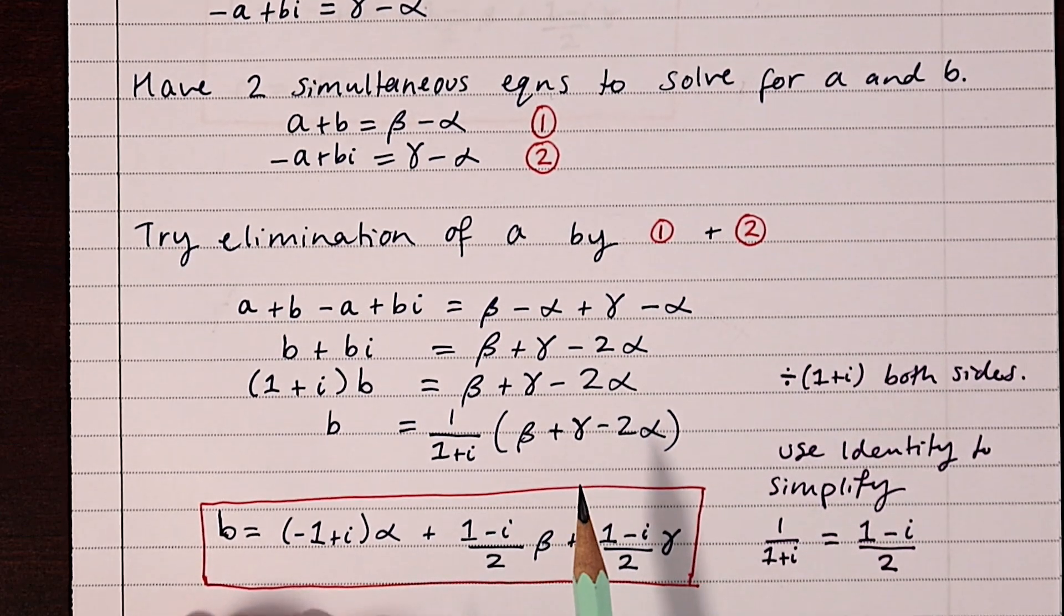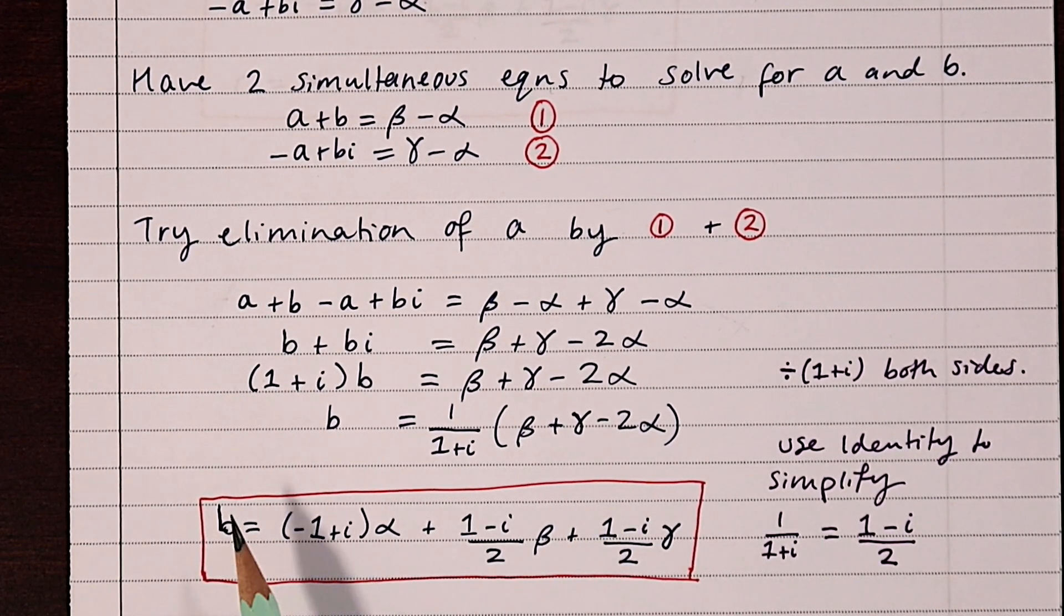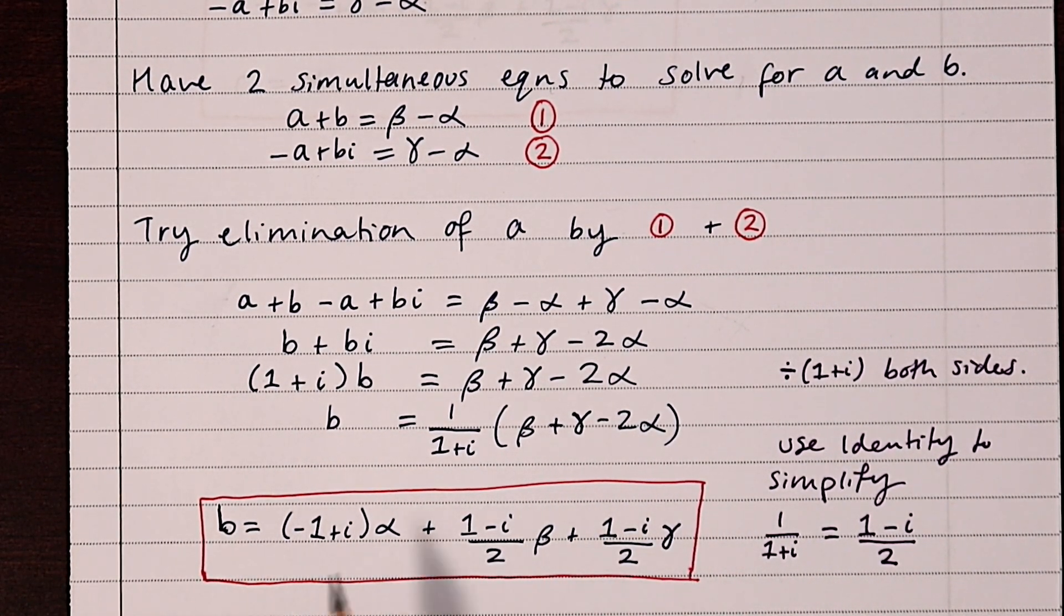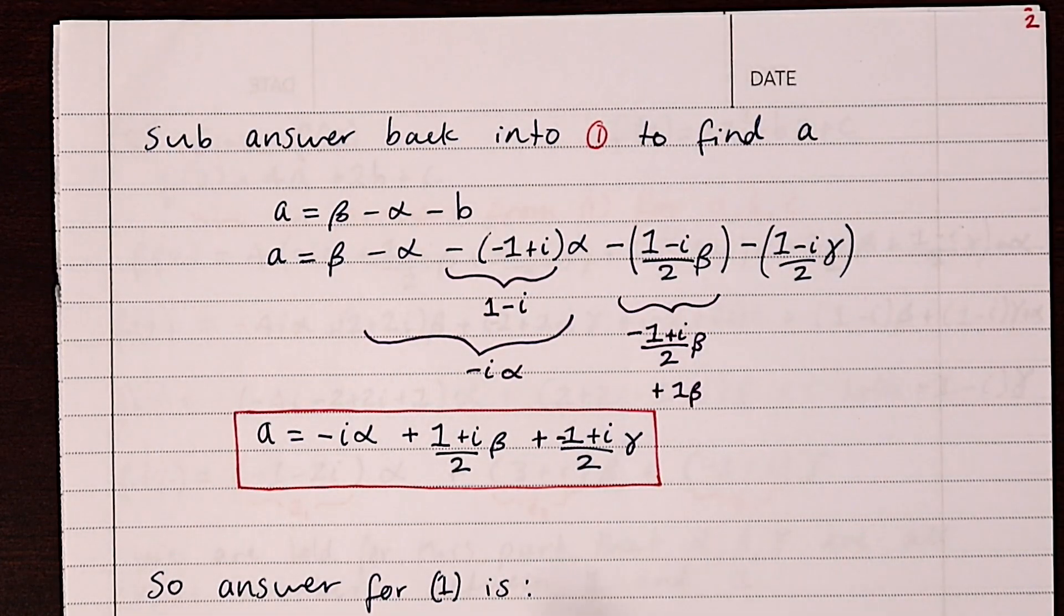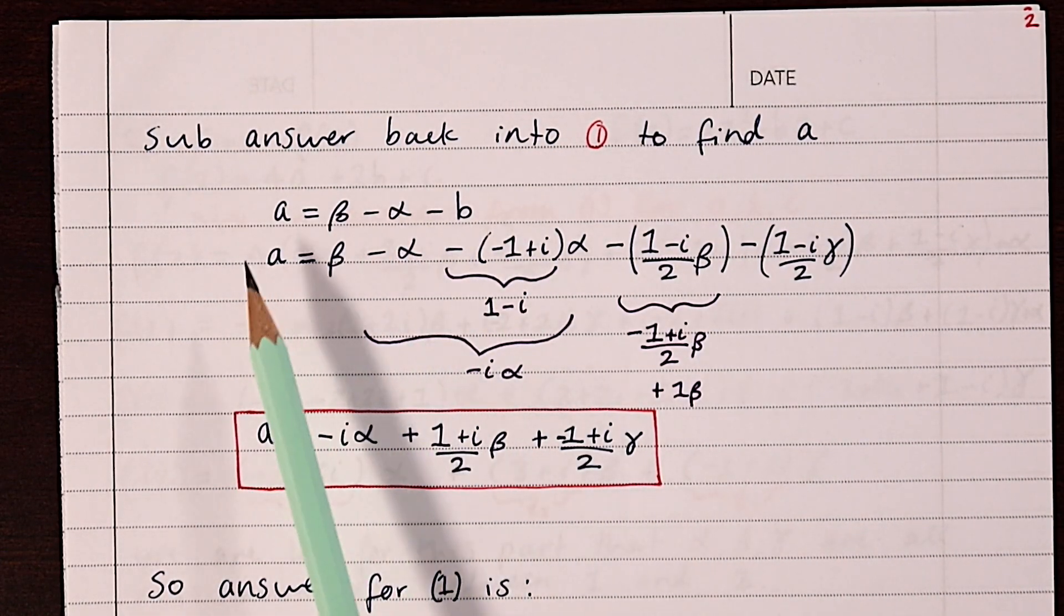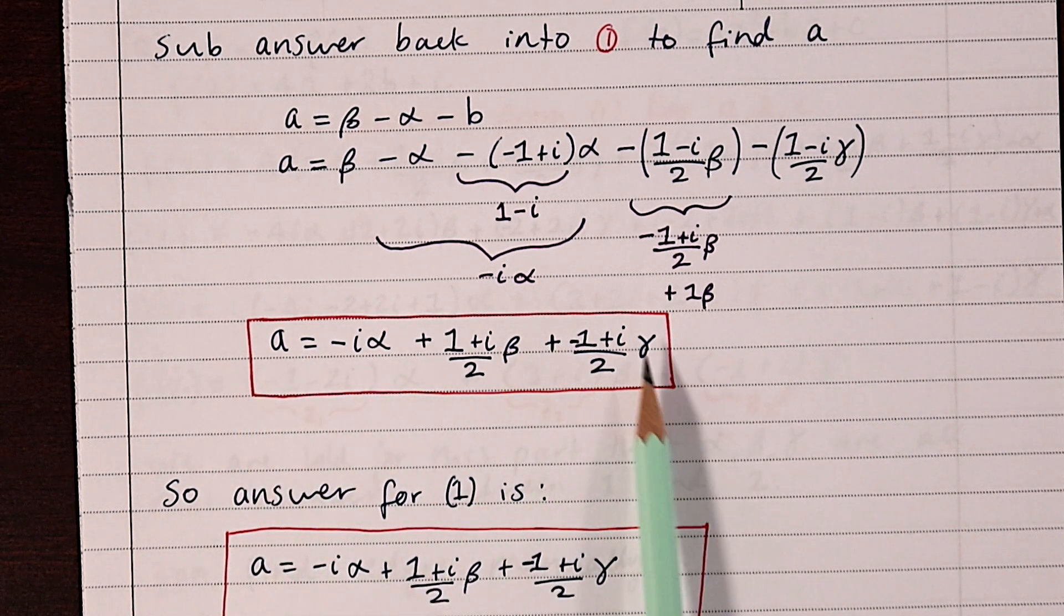So we've ended up with two simultaneous equations to solve for a and b. We can solve them by elimination to find out what our value of b is in terms of alpha, beta, and gamma. Now that we know b, we can substitute it back in to find a, which has a similar looking form.